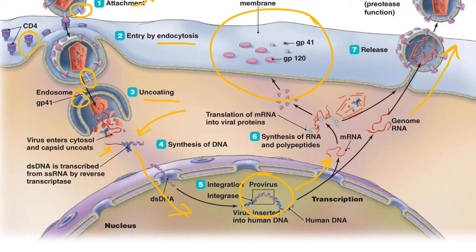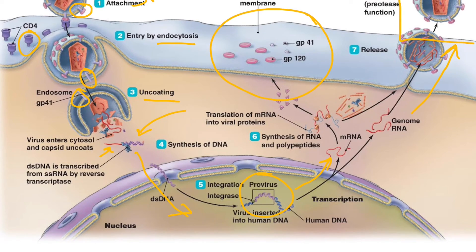The GP41 and GP120 spikes migrate to the host cell's membrane so that when budding takes place and the membrane of the new virion forms, it already contains all the spikes it needs. Assembly and maturation take place — protease does its job to break apart the polyproteins into appropriate subunits — and in the end we have a complete, intact HIV virion ready to go infect another CD4 T-cell.